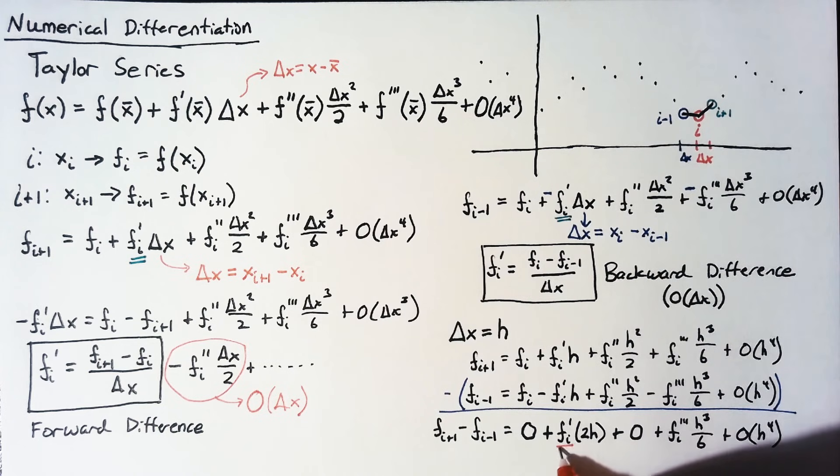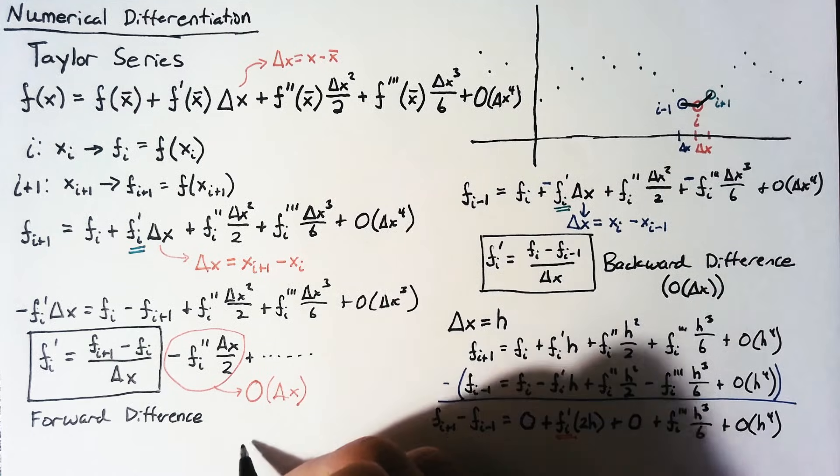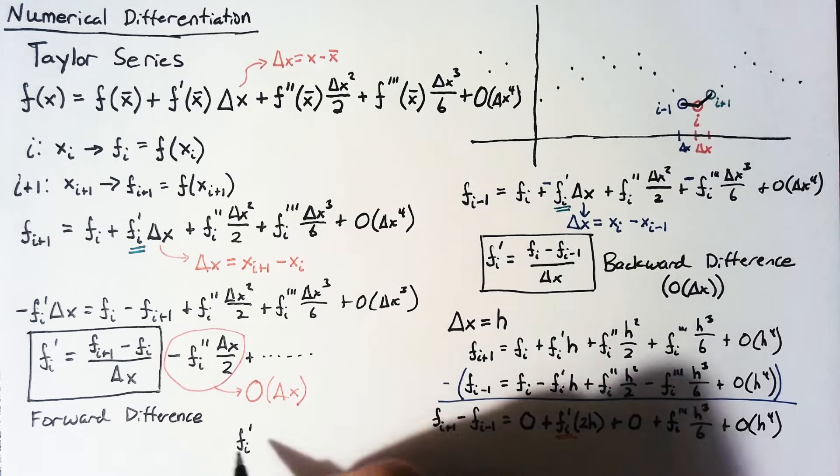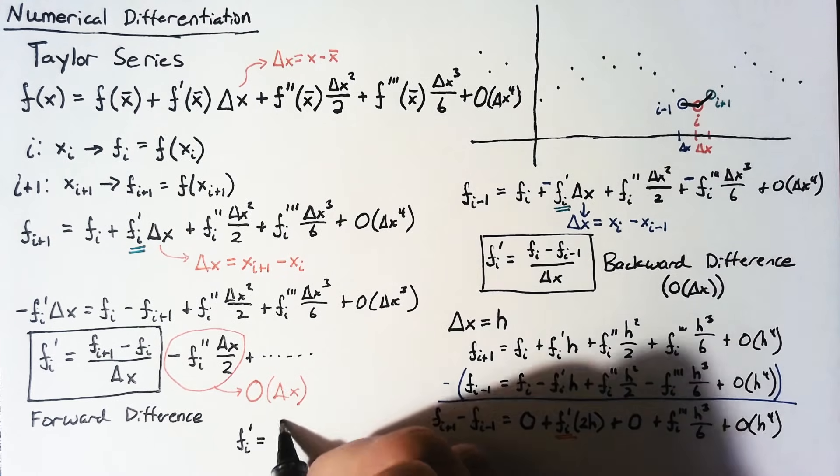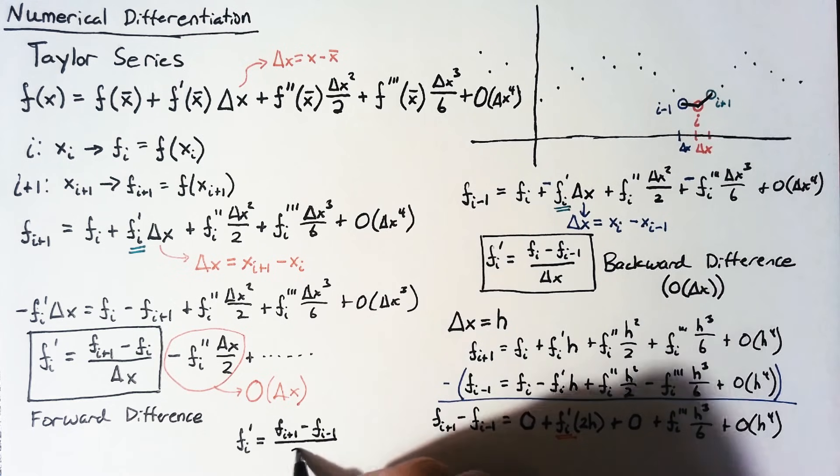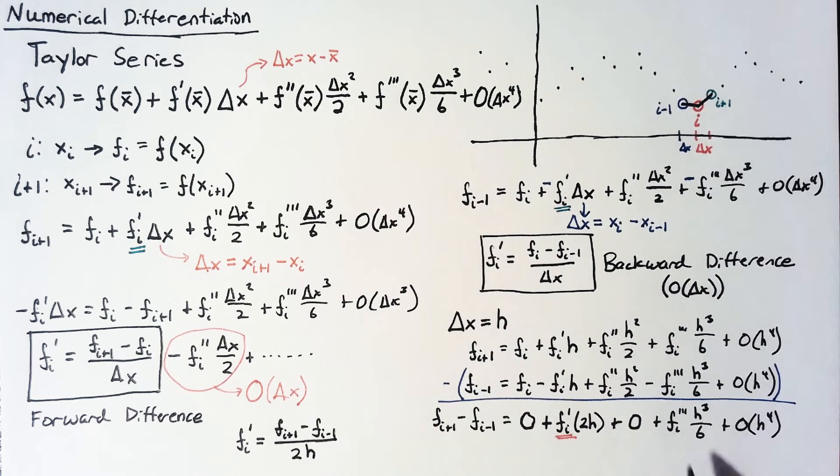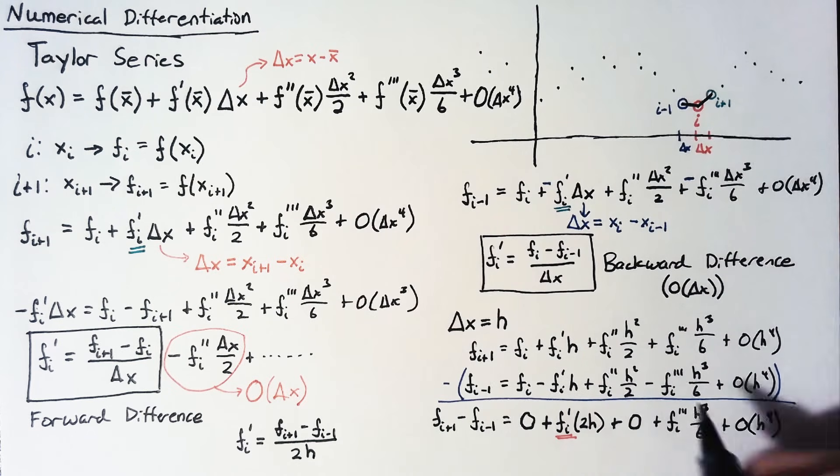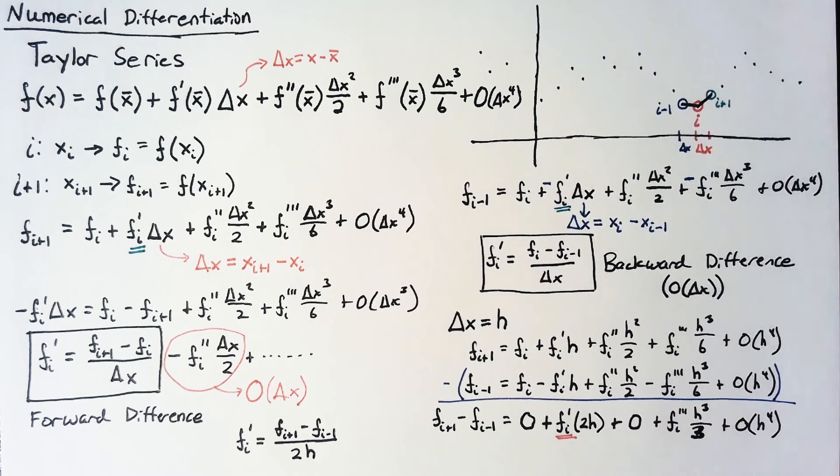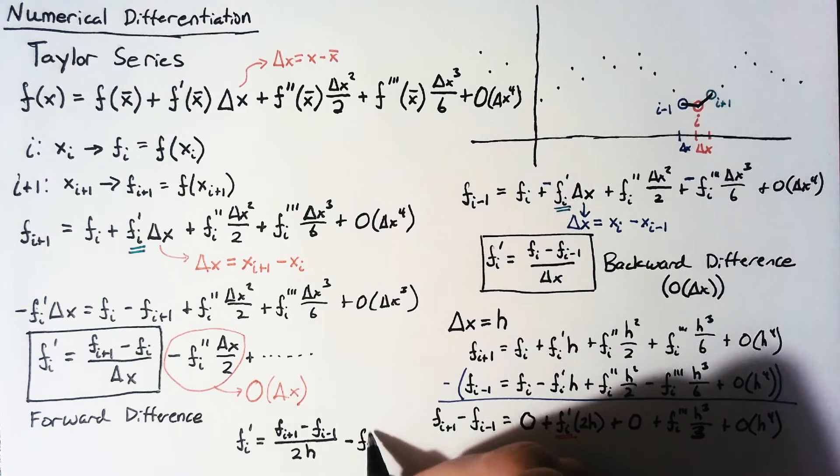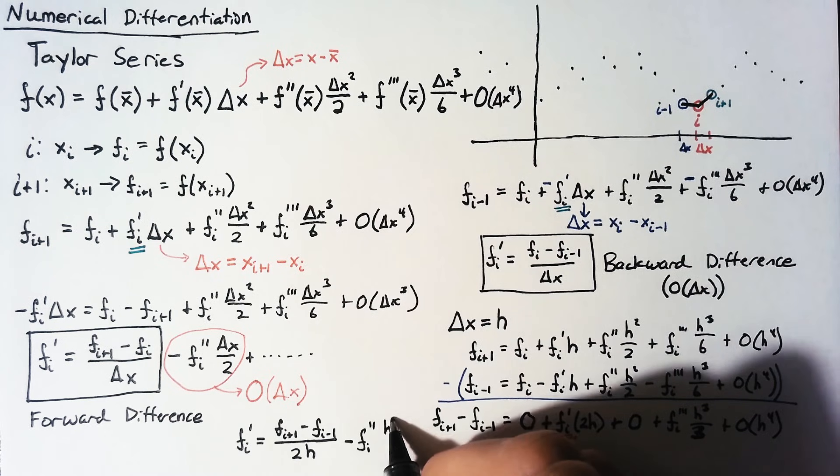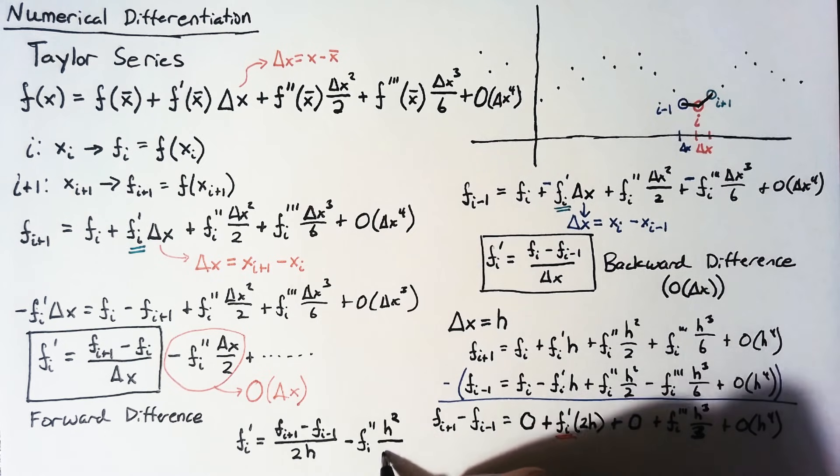So, once again, we're going to solve for fi prime. And we're going to end up with the following. Our fi prime is going to be equal to the difference between these two values over 2h. And then we have our error term. Now, we're dividing by 2h. This should be a 3. Sorry about that. We're going to divide by 2h. And so, we end up, again, fi double prime. And we'll have not h cubed, but h squared. And in the denominator, a 6.